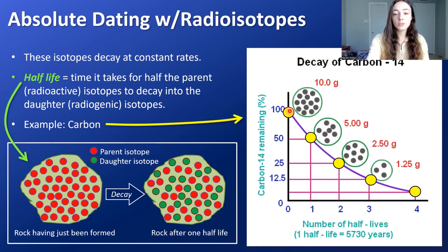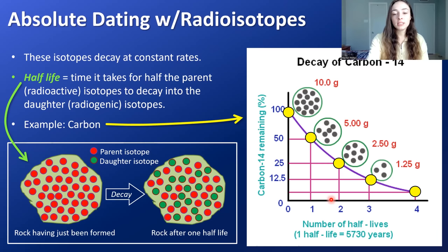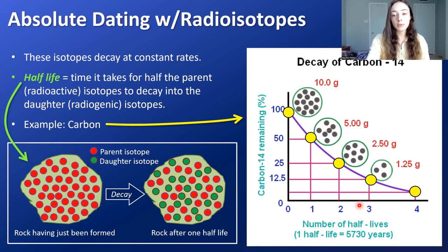Carbon-14 is the radioactive isotope of carbon. Just after formation, a sample has 100% carbon-14. After one half-life, it has 50%; after two half-lives, 25%; after three, 12.5% — halving each time. We can then calculate the number of years elapsed because we know the length of the half-life for each isotope system.